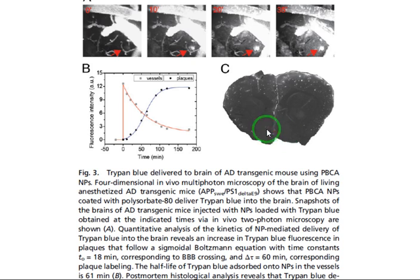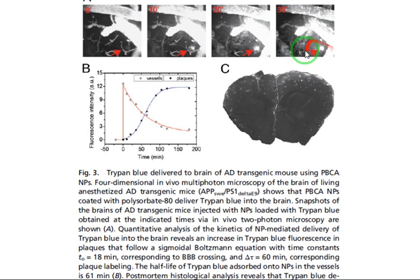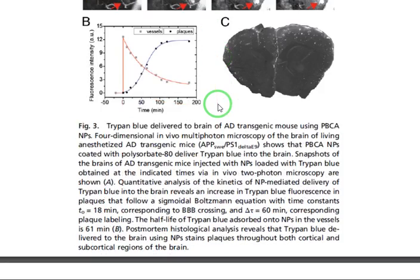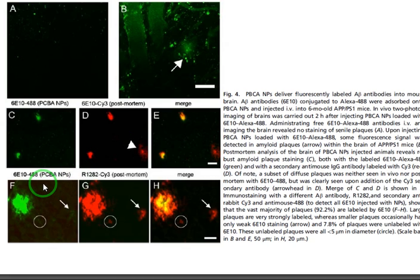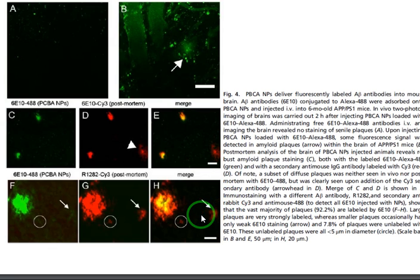Here it is shown that trypan blue, a type of fluorophore, when used with PBCA nanoparticles, crosses the blood-brain barrier and the fluorescence signal is more pronounced, while without the nanoparticles it cannot pass. This slide also shows the use of PBCA nanoparticles for immunoassay, binding antibodies to the nanoparticles — and again the fluorescence signal is increased.